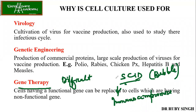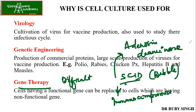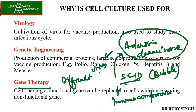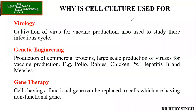SCID happens because of the deficiency of adenosine deaminase. Gene therapy was designed for this by replacing the non-functional gene with the functional adenosine deaminase gene. This was delivered with the help of an inactivated virus carrying the functional adenosine deaminase gene, which was given to the SCID patient. The SCID patient survived 2 to 4 years more but eventually died. So even though we say gene therapy was successful, the lifespan improvement was not that significant, and work is still ongoing.